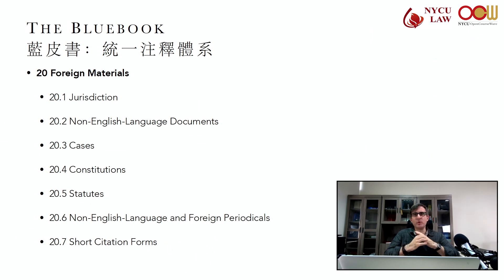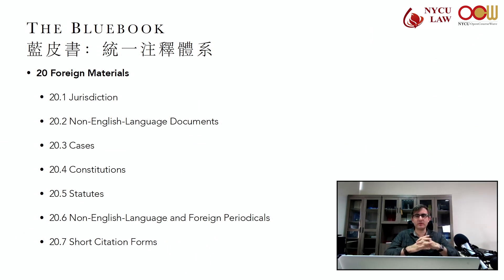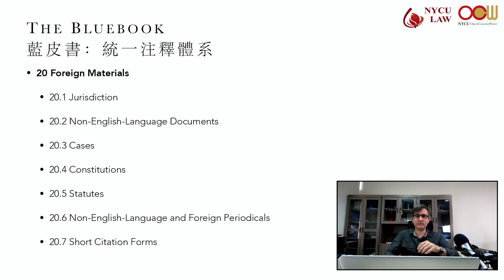Rule 20.6 — non-English language and foreign periodicals. Here you're citing periodicals normally: abbreviate the periodical name as in Tables T6 and T13, using the country of origin. For newspapers, we're going back to Rule 16.6.